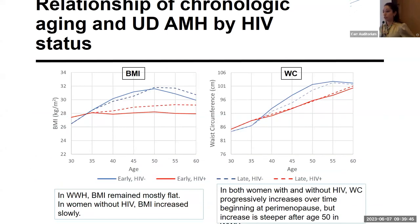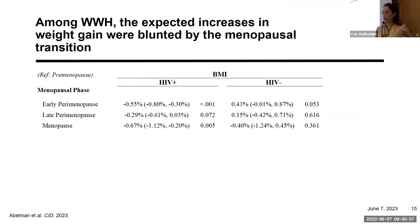This graph shows the relationship of chronological aging and undetectable AMH by HIV status. On the left is BMI — we looked at women with early versus late undetectable AMH (solid and dotted lines respectively), with women with HIV in red and women without HIV in blue. Women with HIV had BMI that remained mostly flat, whereas women without HIV had BMI that increased slowly until about age 50 and then slowly started to decline. On the right, waist circumference showed progressive increases over time for both groups, but beginning at perimenopause around age 50, the increase was steeper among women with HIV.